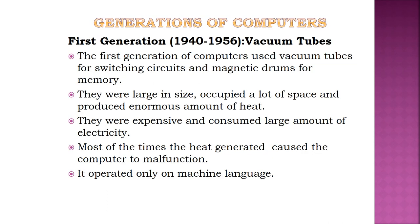Now let us see the generations of computers. In computer terminology, a generation refers to a change in technology. Initially the term was used to distinguish between varying hardware technologies, but nowadays a generation includes both hardware and software that together make up an entire computer system. There are five computer generations. Each generation is discussed in detail along with its time period and characteristics.